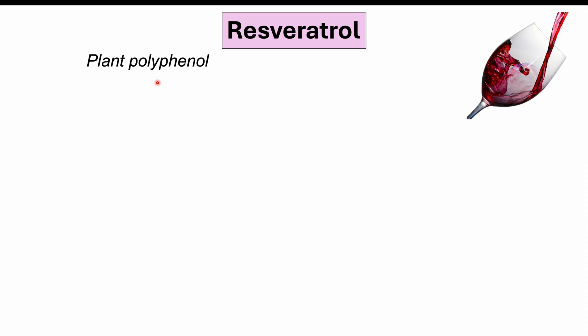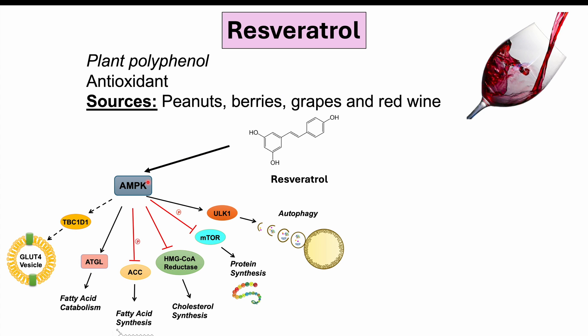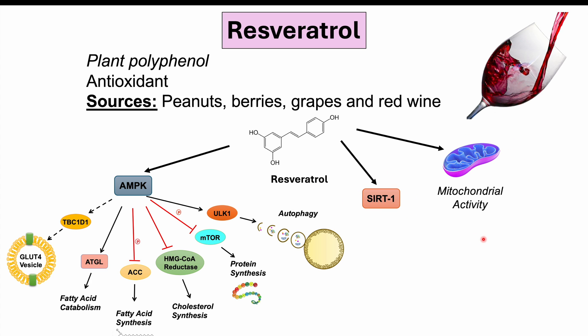The second key activator is resveratrol, a plant polyphenol and antioxidant found in peanuts, berries, grapes, and red wine — many health effects of red wine are attributed to it. Resveratrol activates AMPK, an important signaling pathway that is also activated during caloric restriction, increasing autophagy and decreasing mTOR signaling. Resveratrol has also been found to directly activate SIRT1, which is why individuals often supplement with resveratrol in combination with NMN. Resveratrol also appears to increase mitochondrial activity.